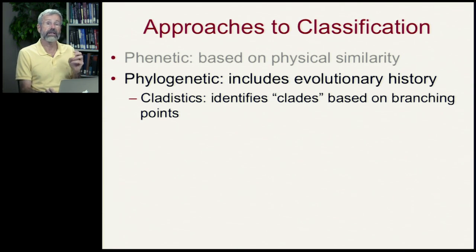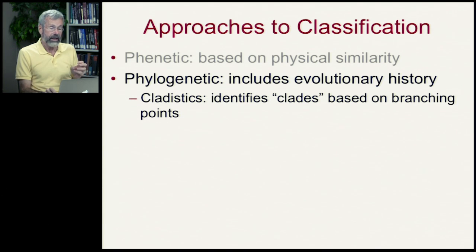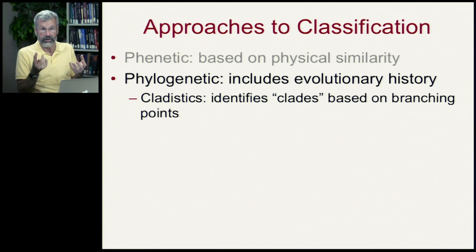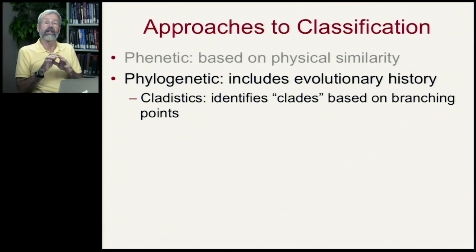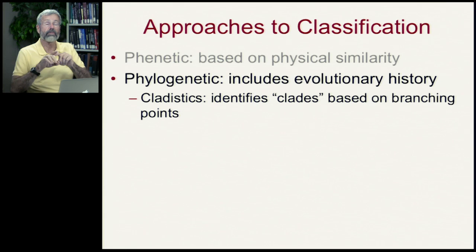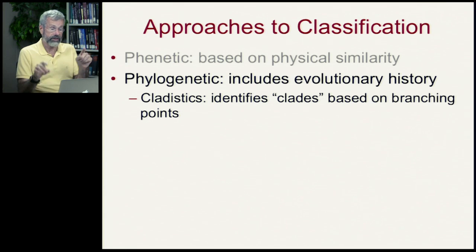The first one is known as cladistics, and this identifies clades based on branching points. Clade is just a Greek word that means branch. So we're going to have family trees — evolutionary trees — and they're going to split off. We're going to see where those branching events take place. That's cladistics.